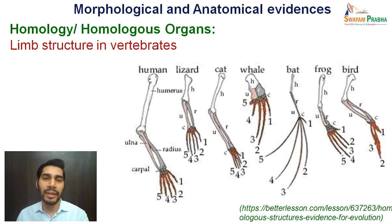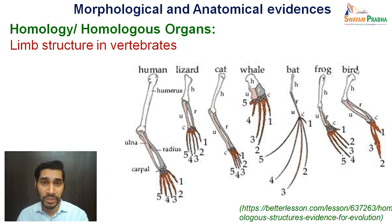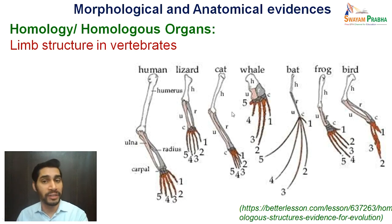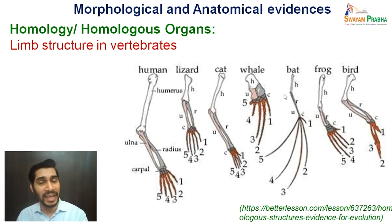The example shown here is of limb structure, particularly the forelimb structure of different vertebrates — ranging from human to lizard, cat, whale, bat, frog and bird. The basic structure, if you see, they all have a humerus, then radius and ulna, followed by the carpals. Except minor differences, rest all have the same basic pattern. But function-wise, they do differ in different organisms or vertebrate classes. From an evolutionary point of view, they indicate that all these organs have a common ancestry, and the organisms possessing them might have originated from a common ancestor, which supports evolution.